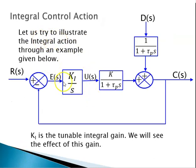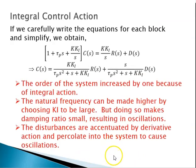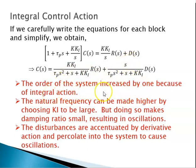For integral action, K_i over s is the controller block, and K_i is the tunable integral gain. If we carefully write the equations for each block and simplify, we get a quadratic equation. In standard second-order form: omega_n squared corresponds to K_i over tau_p, 2*xi*omega_n corresponds to 1/tau_p, with an additional s term. The order of the system increased — the original first-order system became a second-order system when we introduced integral action.